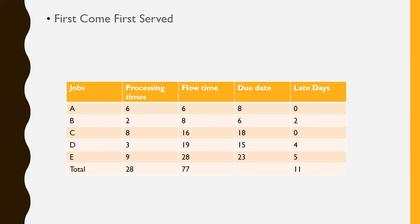The totals for First Come First Serve are: total processing time = 28, total flow time = 77, and total late days = 11.